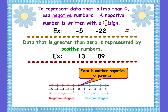Data that is greater than zero is represented by positive numbers. These are the numbers that you've dealt with all through elementary school — positive 13, positive 89. However, when we read it, we don't read it as positive 13, positive 89. This symbol for positive is a plus sign, called a positive symbol. We don't go around writing our numbers with a positive symbol in front of it. When there's no symbol in front of it, like just 13 or 89, then it's automatically assumed it's a positive number.